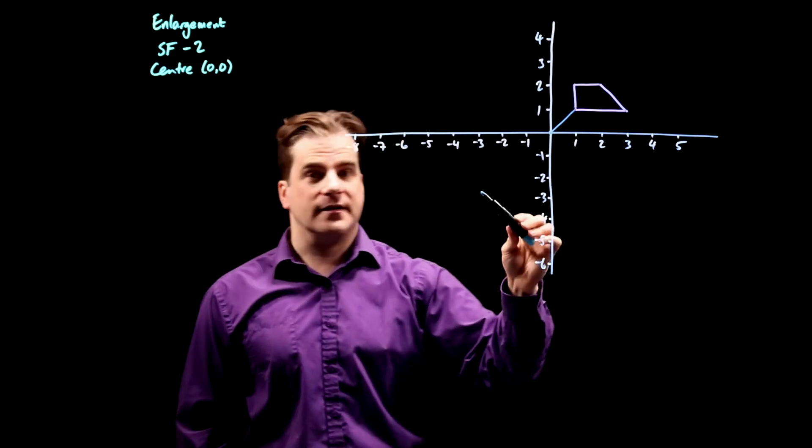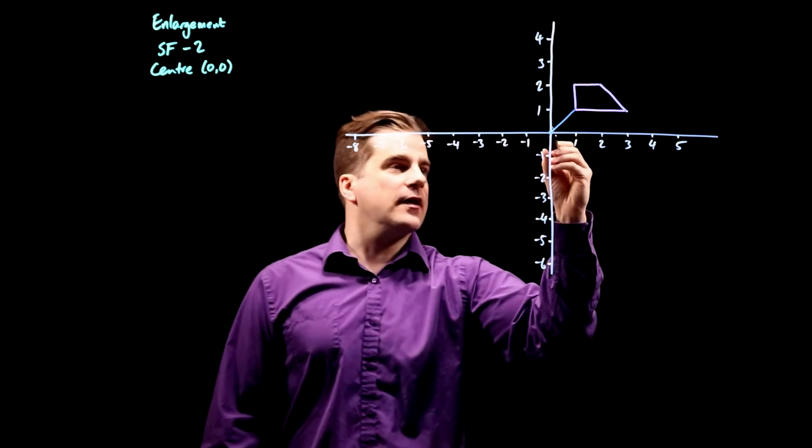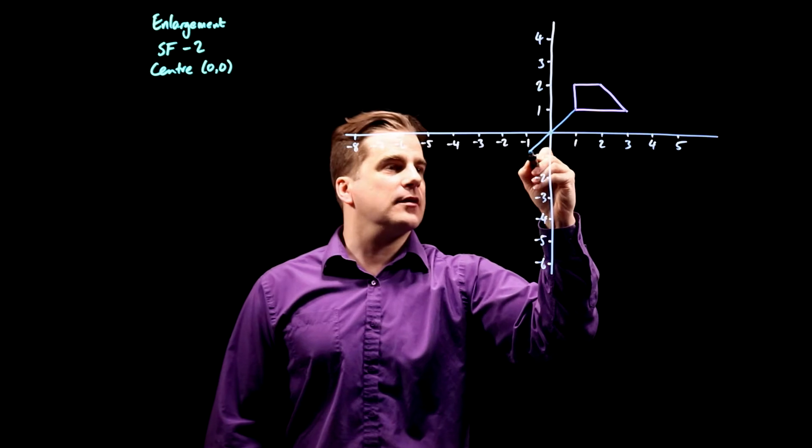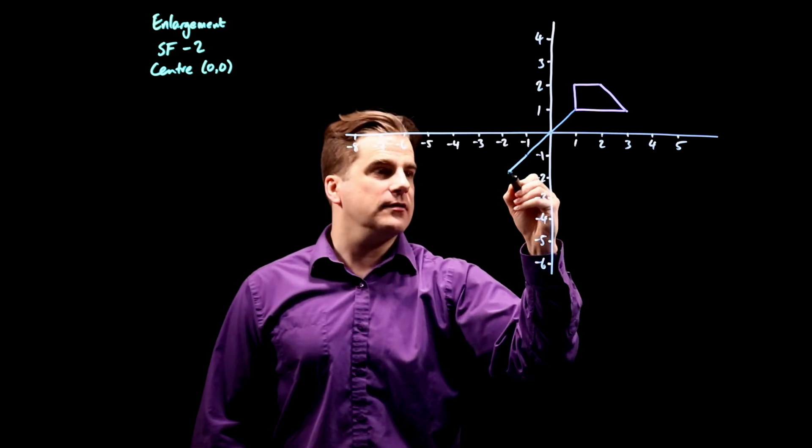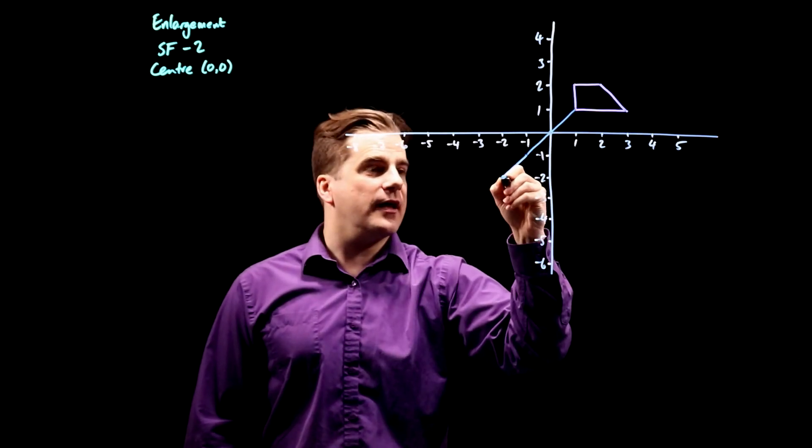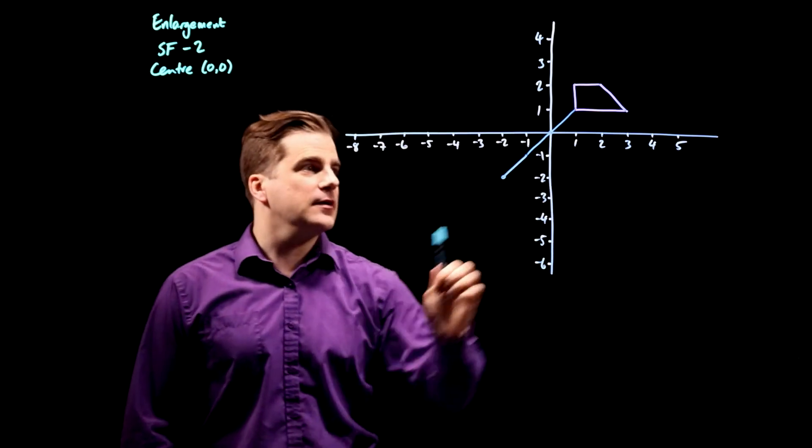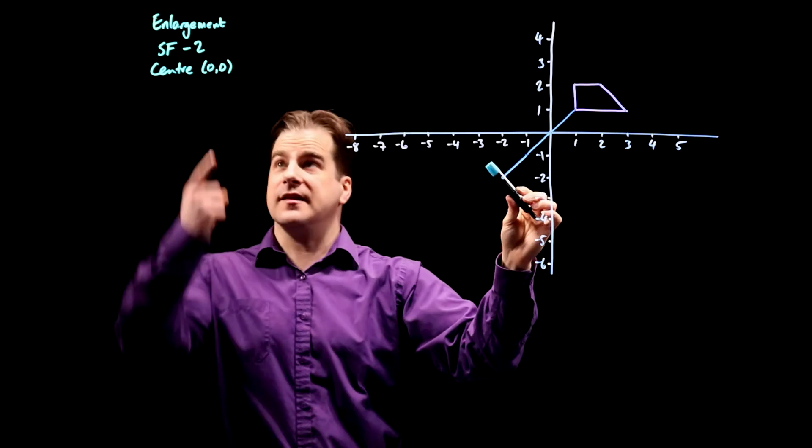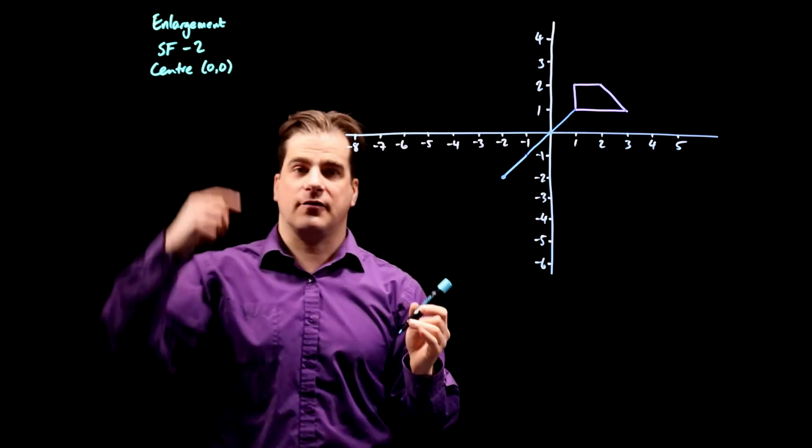that line will be twice as big times two on the other side. So that line will come down there to minus one, minus one, and then again, to minus two, minus two. So that point there will end up there at minus two, minus two. It's going in that direction because it's negative. And it's twice as long because the scale factor is two.